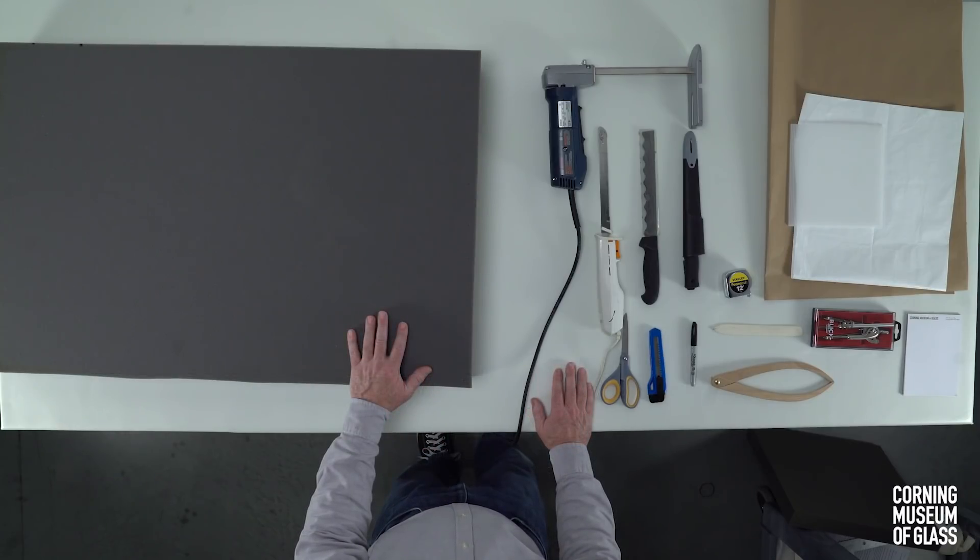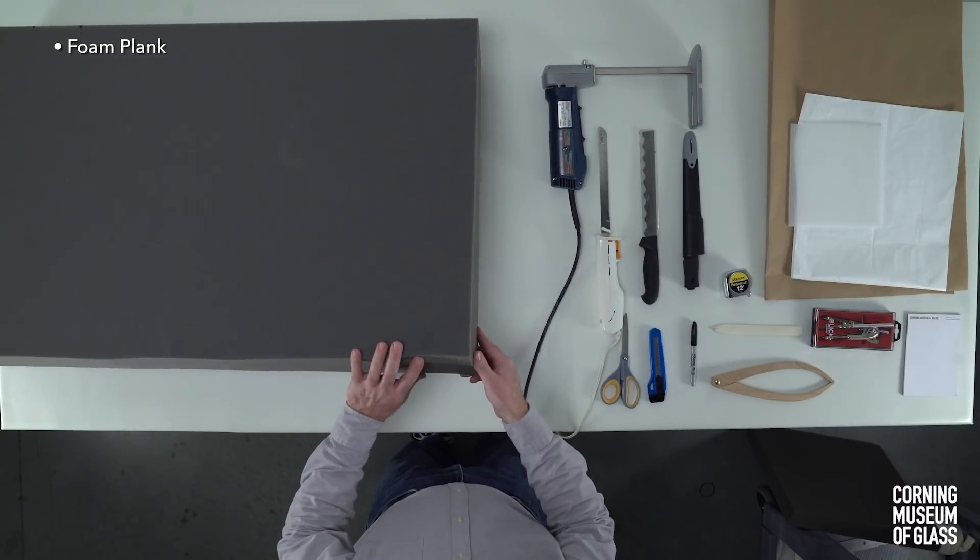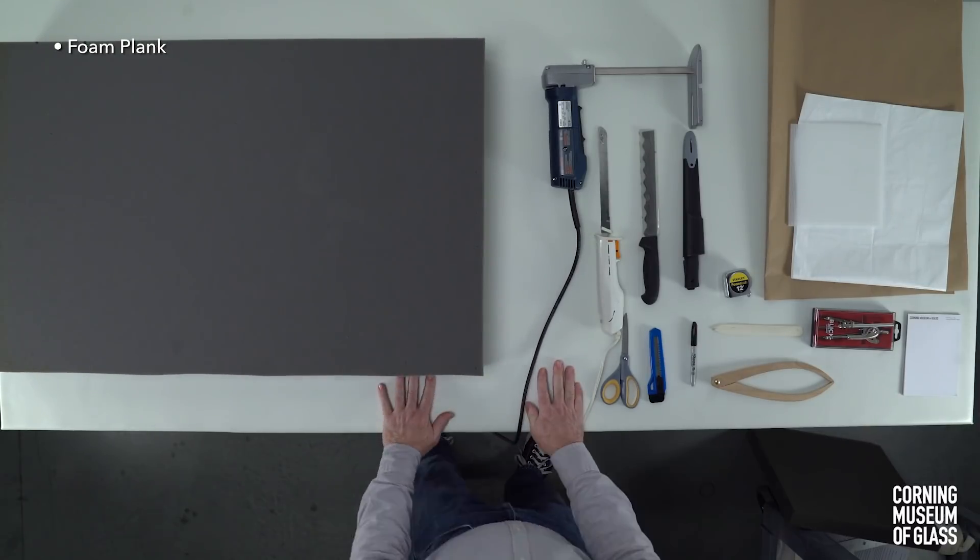This is a 6-inch thick foam plank cut to the size of our crate's interior. We recommend using foam between 3 to 6 inches thick.